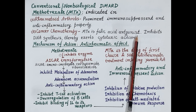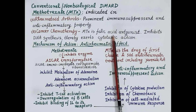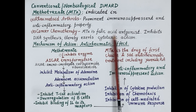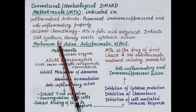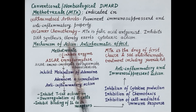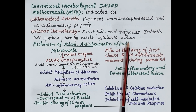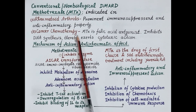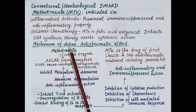Methotrexate is also important in cancer chemotherapy. Cancer is caused by uncontrolled proliferation or multiplication of cells. Methotrexate is a folic acid antagonist — it prevents utilization of folic acid by the cells, which further inhibits synthesis of DNA, so cells are unable to proliferate, producing cytotoxic action useful in cancer chemotherapy.